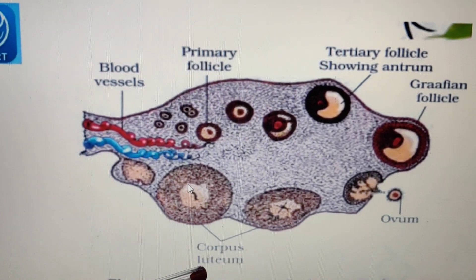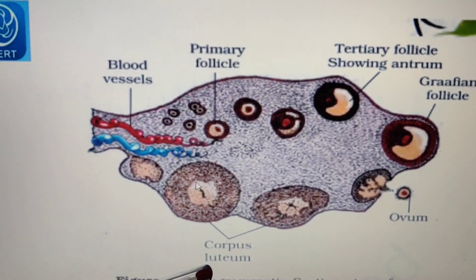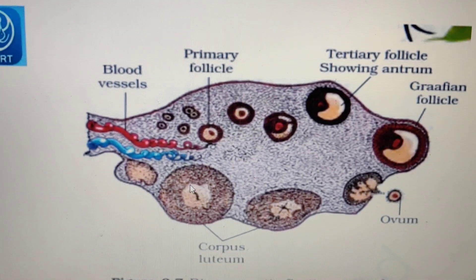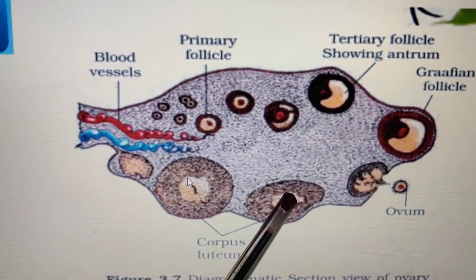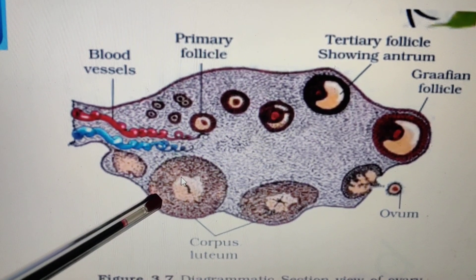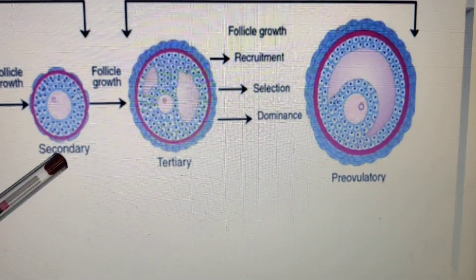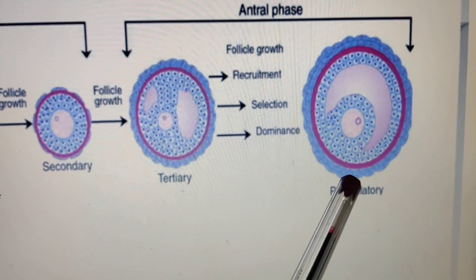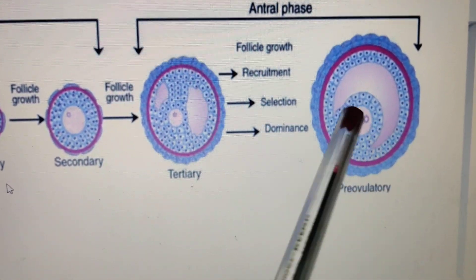The corpus luteum produces the hormone progesterone. If fertilization takes place, then this corpus luteum persists; and if fertilization does not occur, then it changes into corpus albicans. You can easily see the difference between secondary follicle, tertiary follicle, and Graafian follicle in terms of their size and the cavity present.